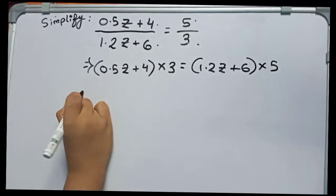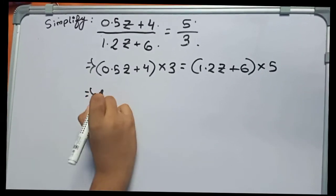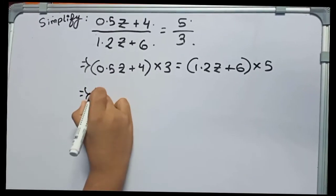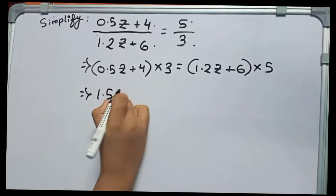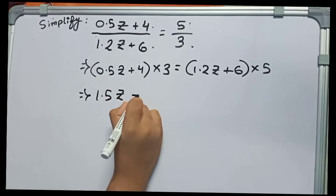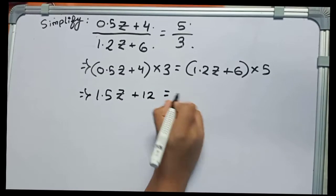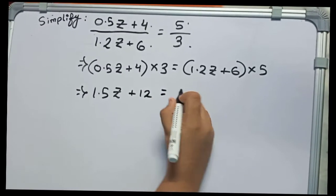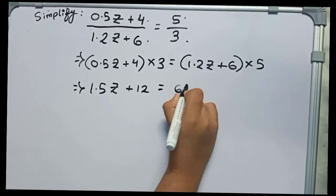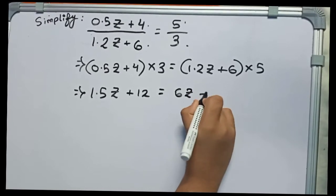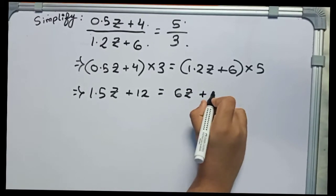When I put the values, 3 into 0.5 it becomes 1.5z plus 3 into 4 is 12 equals to 5 into 1.2 it becomes 6z plus 5 into 6 is 30.